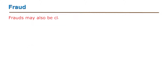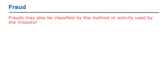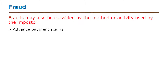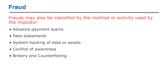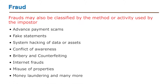Frauds may also be classified by the method or activity used by the imposter. These include, but are not restricted to, advanced payment scams, fake statements, system hacking of data or assets, conflict of awareness, bribery and counterfeiting, internet frauds, misuse of properties, and finally money laundering and many more.